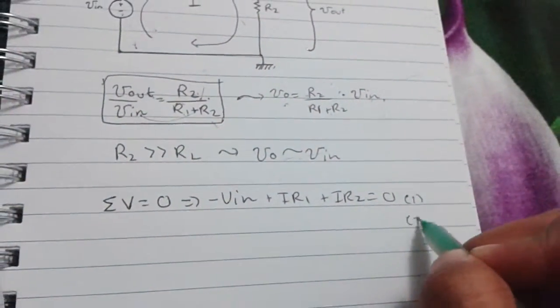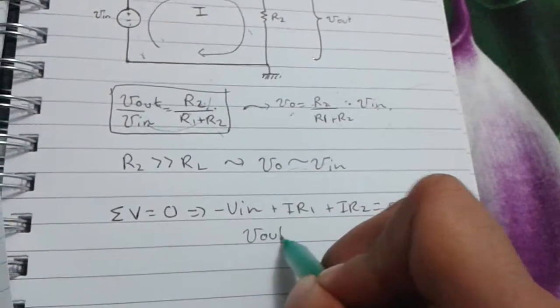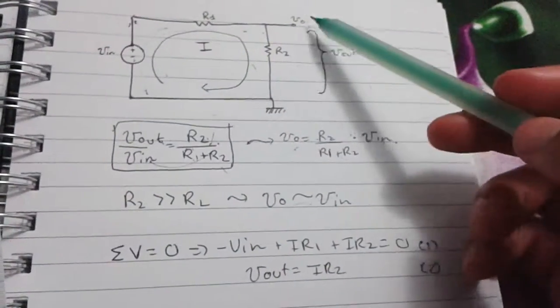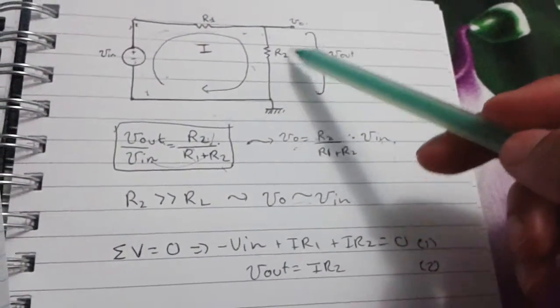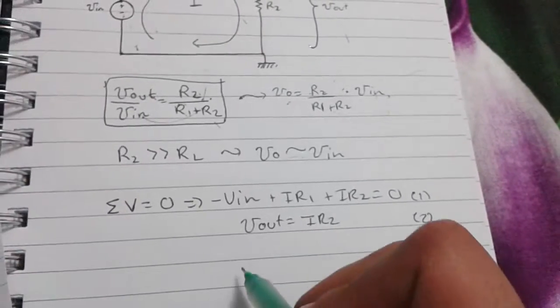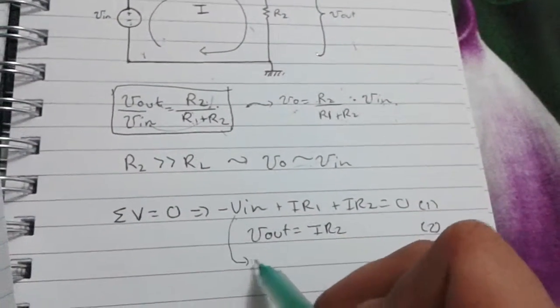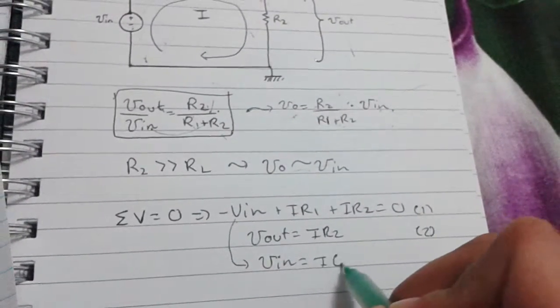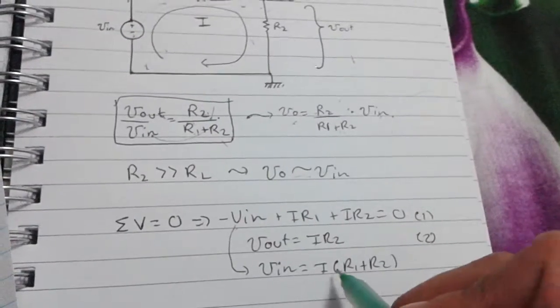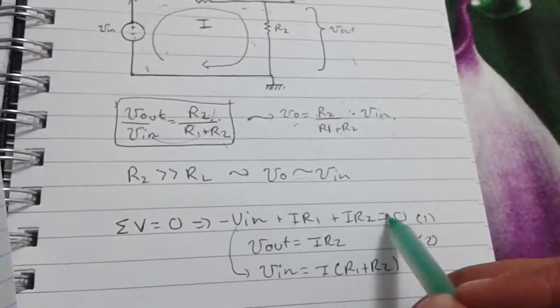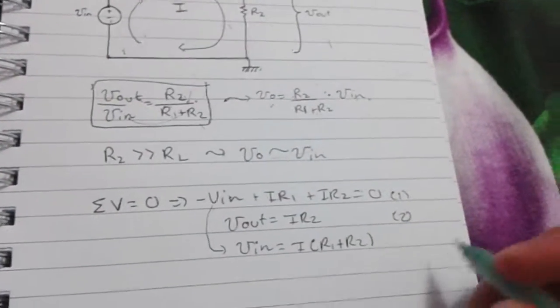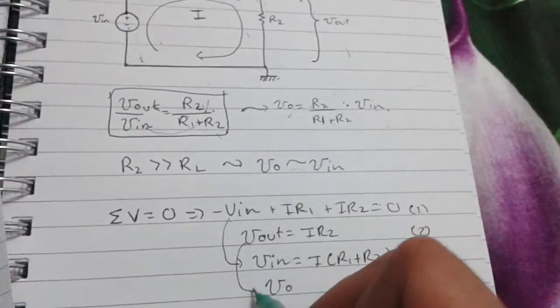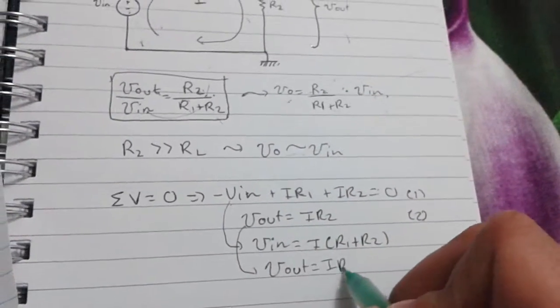All right. So, the second equation is basically this: I times R2, right? Obviously, because output voltage is equal to the current times the second resistance. So, let's use some algebraic manipulation here.